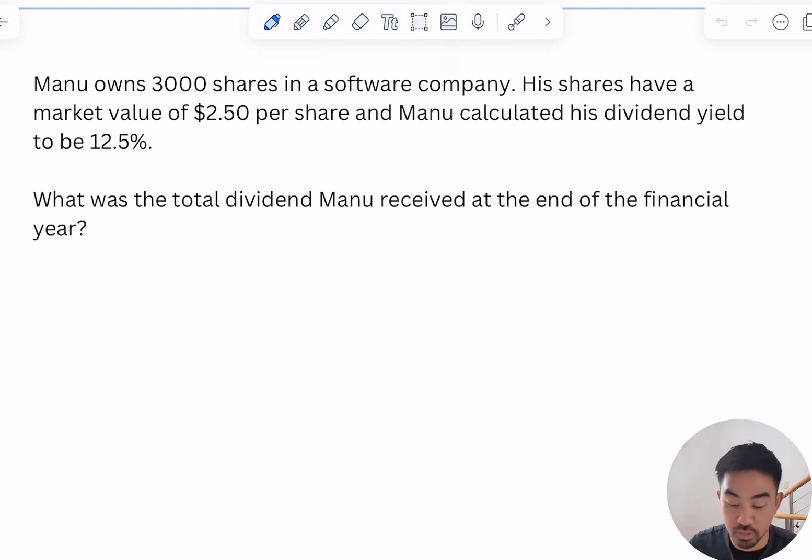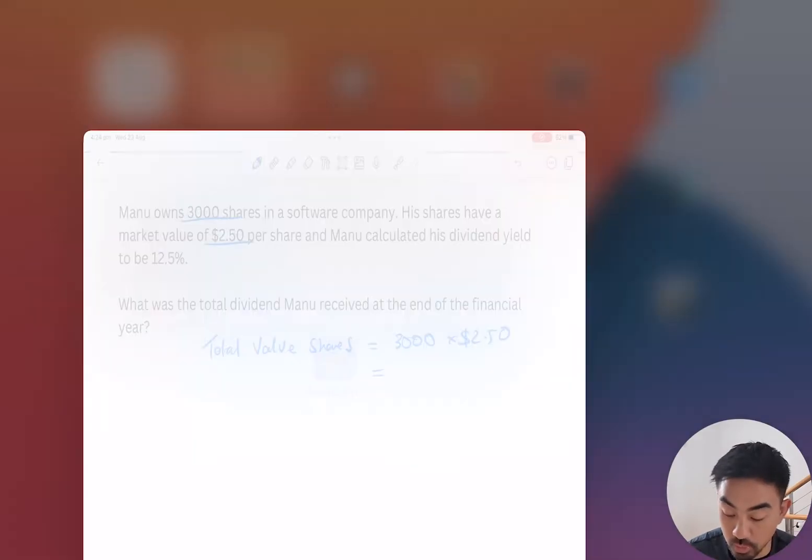Of what it's worth. So he's got 3,000 shares and they're worth $2.50 each. So let's say the total value of shares is going to be 3,000 times $2.50. Let me just work that out.